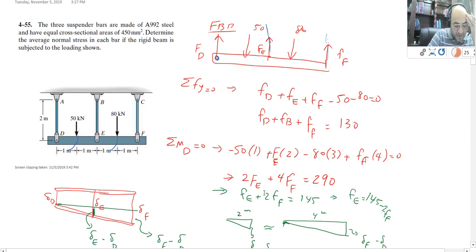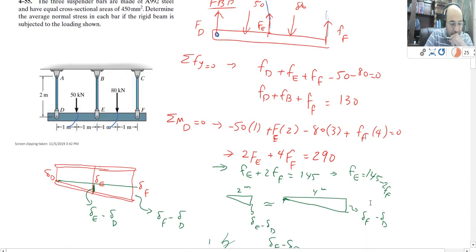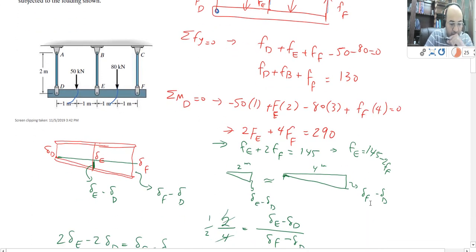FE times 2, minus 50 times 1, minus 80 times 3, plus FF times 4—that distance is 4 meters. You get your third equation. You have three equations, three unknowns. We start solving them. You can use substitution method. Actually, I have only two equations so far—I'm going too fast.